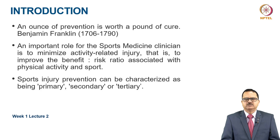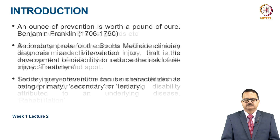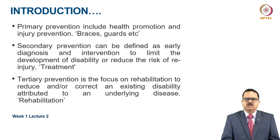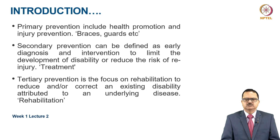Sports injury prevention can be characterized as primary, secondary, or tertiary. Primary prevention includes health promotion and injury prevention, such as use of braces and guards. Secondary prevention is defined as early diagnosis and intervention to limit disability or reduce the risk of re-injury — in other words, treatment. Tertiary prevention focuses on rehabilitation to reduce or correct an existing disability attributed to an underlying disease.